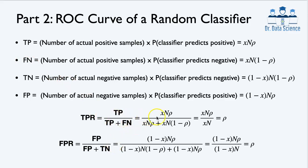Now plugging these values into the ratios: for true positive rate, the denominator is X·n, since ρ + (1−ρ) = 1, so we get X·n·ρ / X·n = ρ. Similarly for false positive rate, (1−X)·n cancels, and we also get ρ. This means that for a random classifier that predicts positive with probability ρ, regardless of the data distribution, true positive rate always equals false positive rate equals ρ. As ρ varies from 0 to 1, this traces the 45-degree diagonal line.